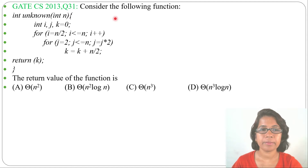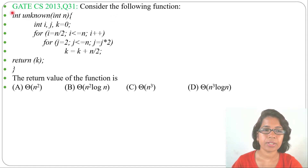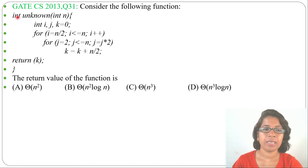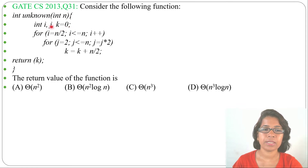Hi! Let's solve one previous question of algorithm analysis. This question was asked in GATE CS 2013, question number 31. Consider the following function: int unknown(int n), with variables i, j, k, and k equals 0.